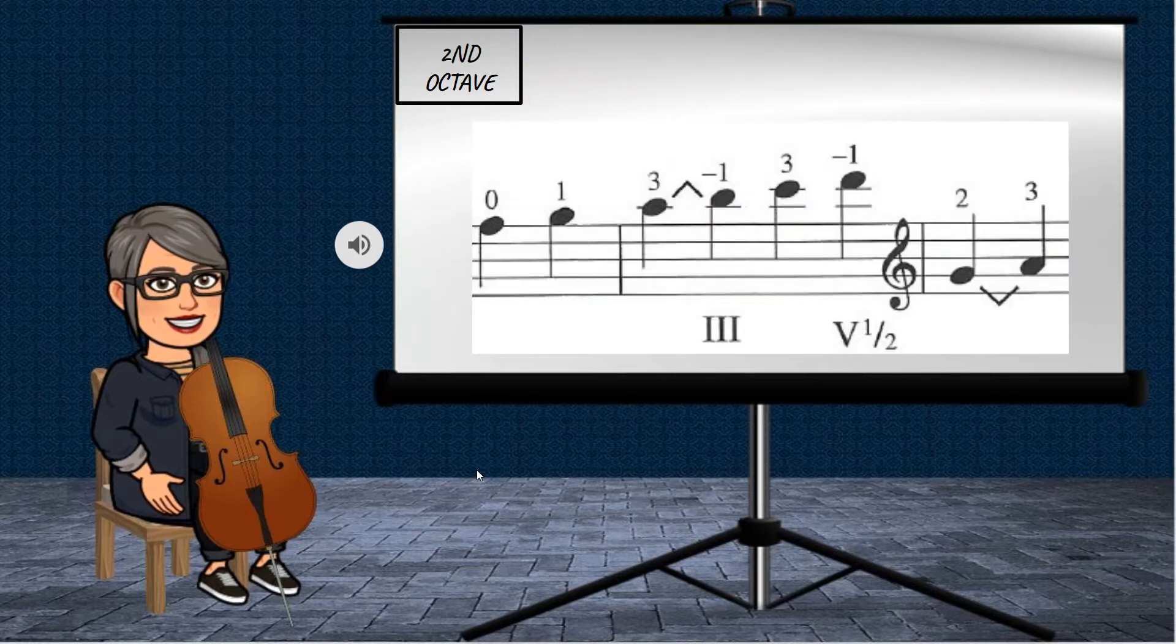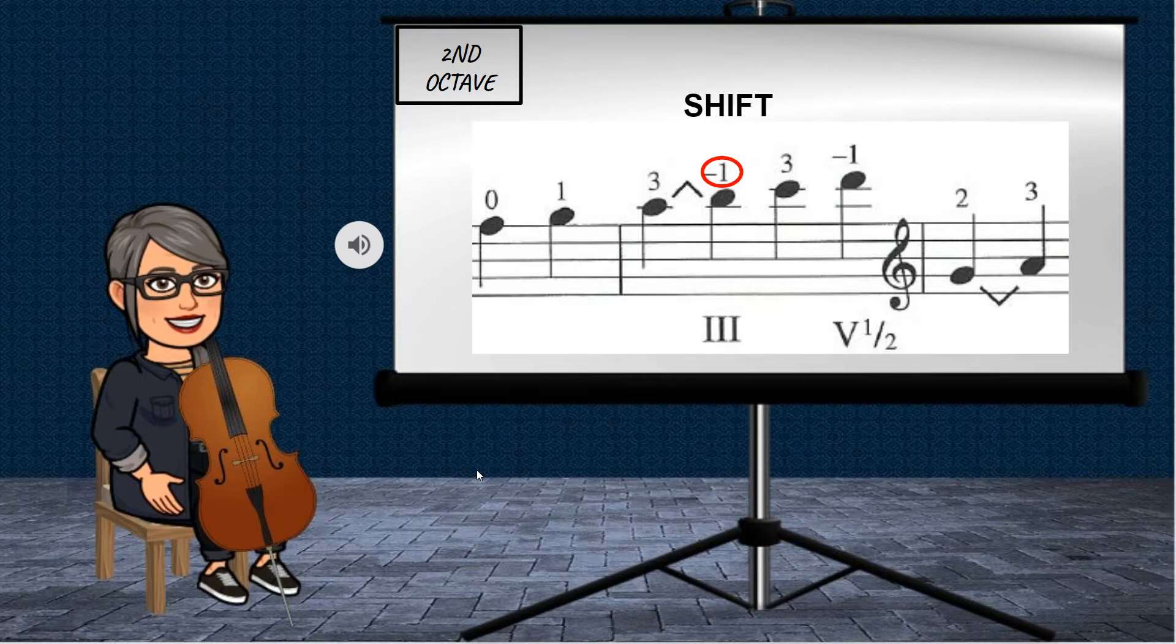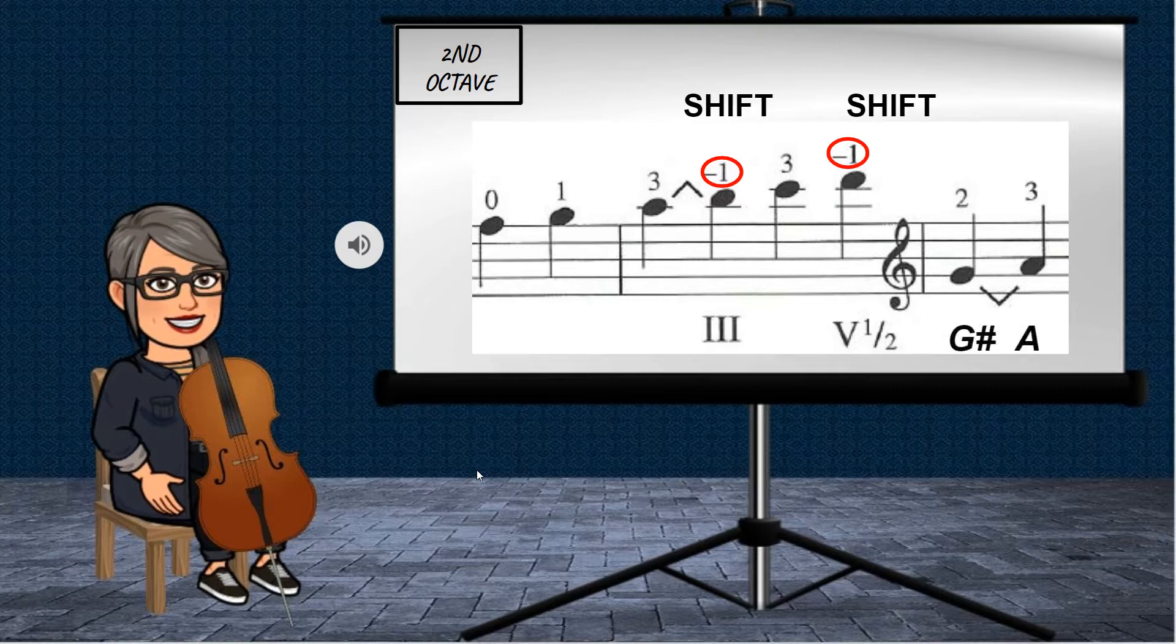Now let's take a look at the second octave. The second octave starts on open A. Then you put your first finger down for B, third finger down for C sharp, and then you're going to shift and place your first finger on D in third position. Then you're going to put your third finger down for E, shift again for F sharp with your first finger. Then we're switching into treble clef. Your second finger goes on G sharp, and your third finger, which is only a half step away, is on A. So make sure that your second and third finger at the end of this are close together since they're only a half step apart.